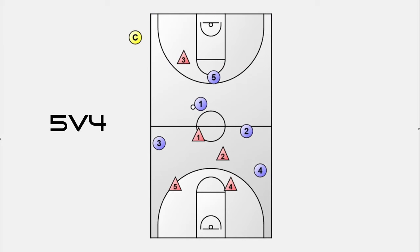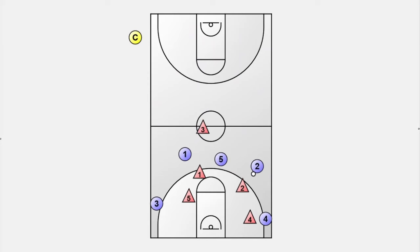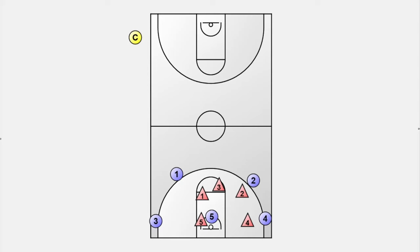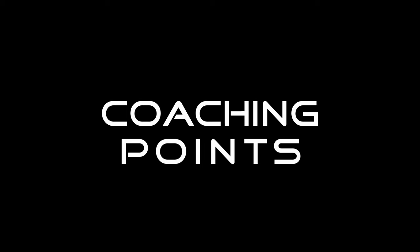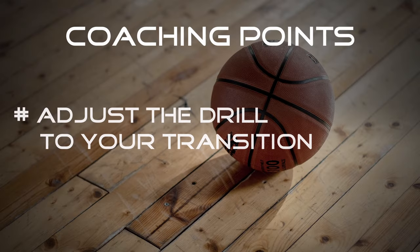Now we have a 5-on-4 transition situation and a temporarily numerical advantage for the offense. Once there is a score or a defensive rebound, the teams reset, switch offense and defense, and go to the other side. In every other situation, like a turnover or a foul, let the drill run. Adjust the drill to the way your transition offense is played — you can easily give instructions when the players are lined up.